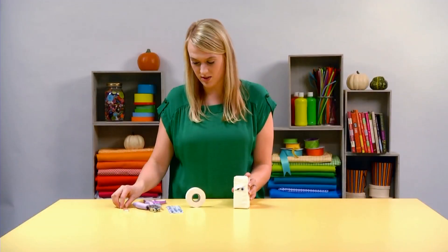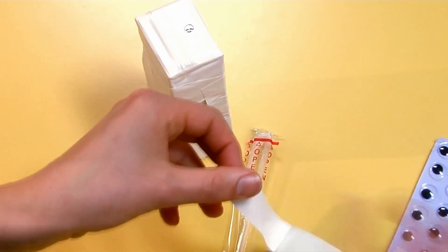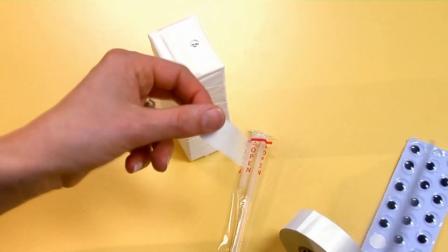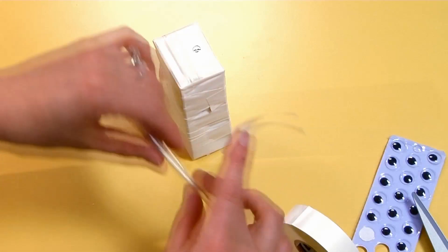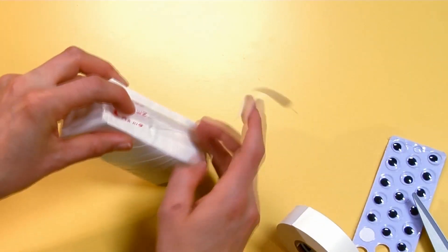The final step is to attach the straw to the side. You're going to need about a one-inch strip of tape. Just hold it on the side like this, and tape it about a third of the way up.